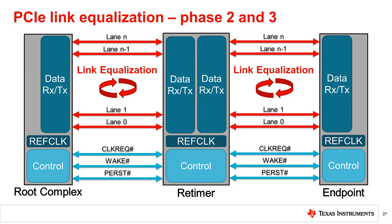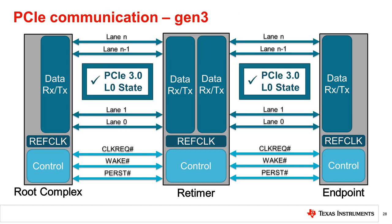In some board designs, particularly those with long channel links, this level of signal quality is not possible and additional signal conditioning may be required. Fortunately, we have a retimer in the link and should have no issues accommodating most any channel length. The link now moves into a Gen 3 L0 state and can communicate reliably at Gen 3 speeds.